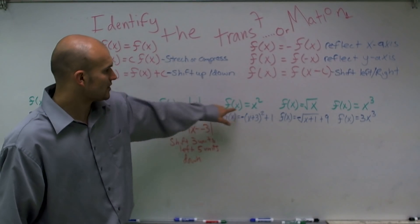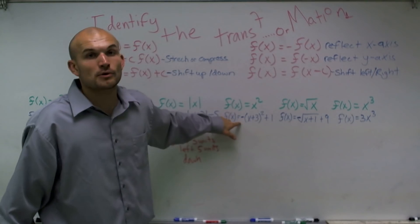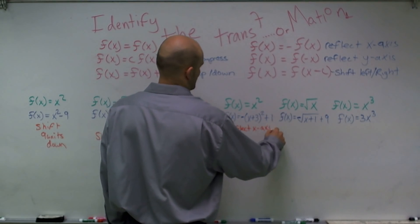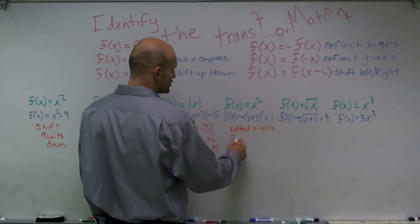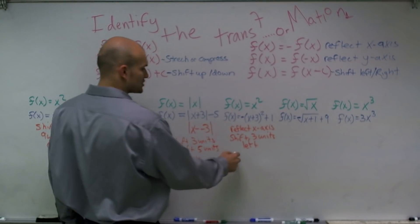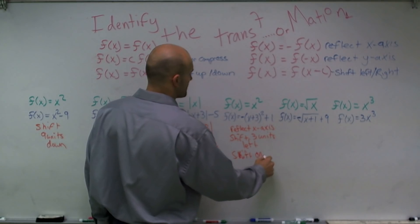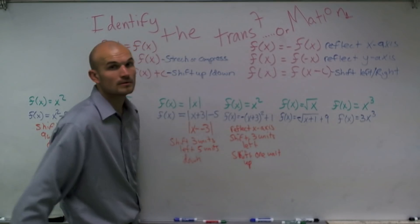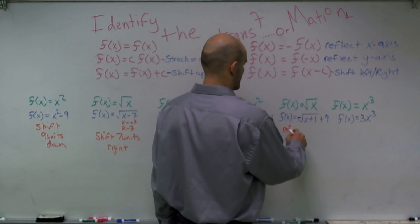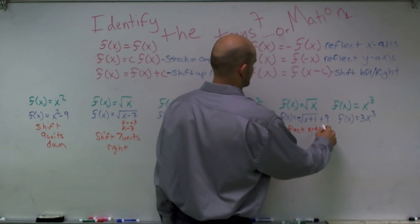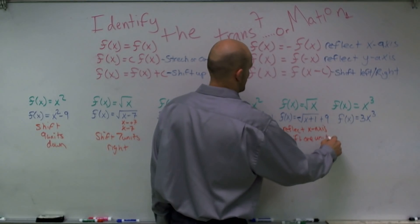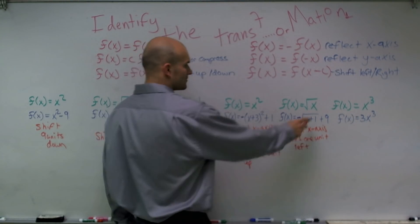Here I have a negative sign outside of my function f of x equals x squared, so I'm going to reflect over the x-axis. I also have x plus 3 inside the function, so I shift three units left, and plus 1 outside, so I shift one unit up. Over here I have a negative square root of x plus 1 — the negative outside means reflect the x-axis, plus 1 inside means shift one unit left, and minus 9 outside means shift nine units down.